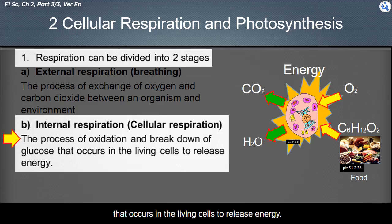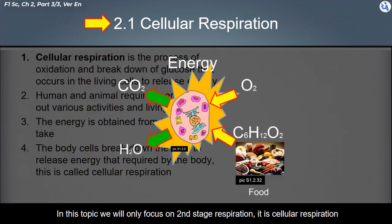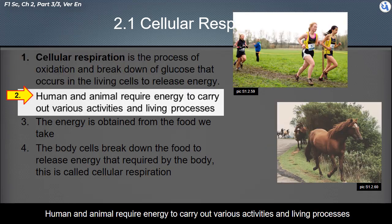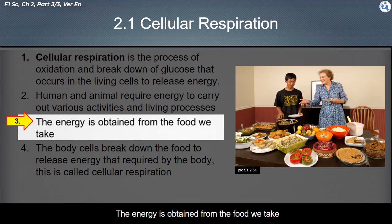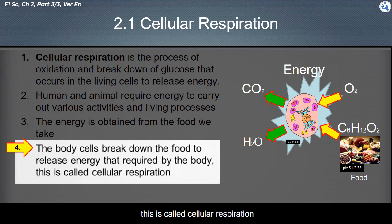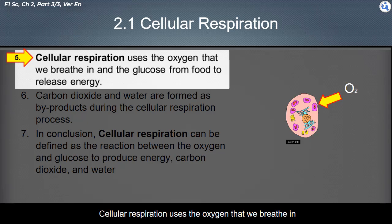Cellular respiration is the process of oxidation and breakdown of glucose that occurs in living cells to release energy. Cells require this energy to perform life processes. In this topic, we will only focus on cellular respiration. Humans and animals require energy to carry out various activities and living processes. The energy is obtained from food, and the body cells break down food to release energy — this is called cellular respiration.